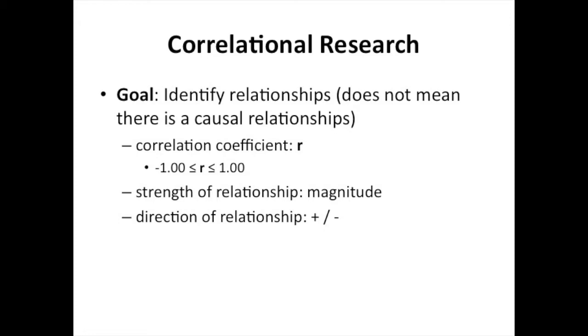The correlation coefficient can range in number from negative 1 all the way up to positive 1. The strength of the relationship or the magnitude of the relationship is represented by how far that number is away from 0, with 1 or negative 1 showing the highest strength of the relationship or the highest magnitude.